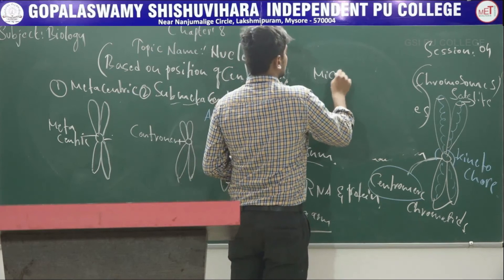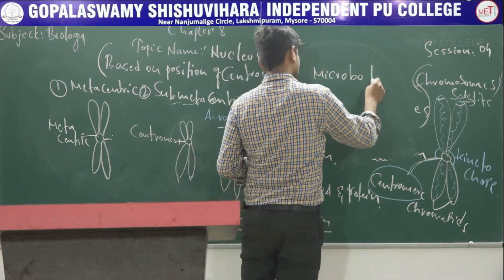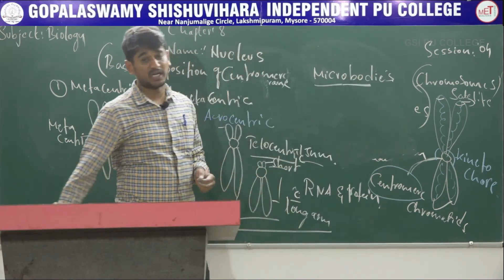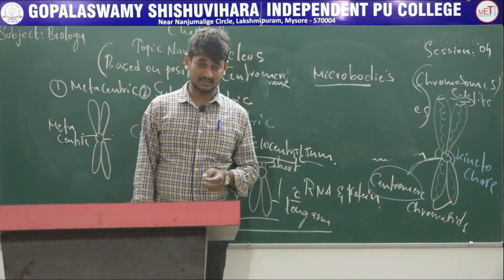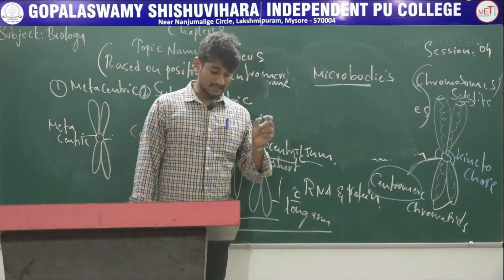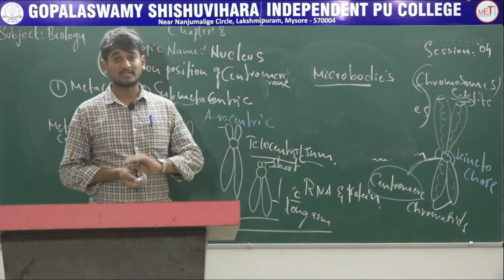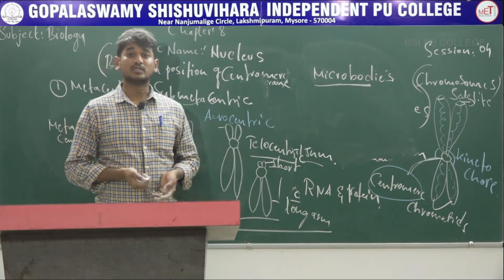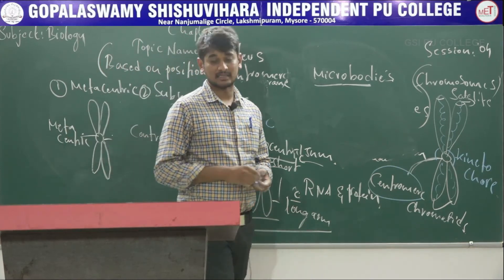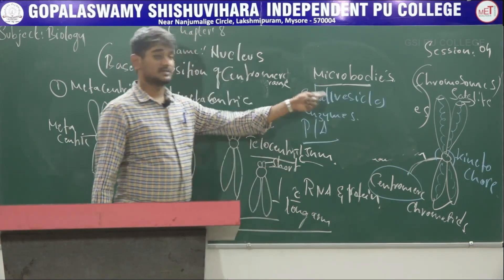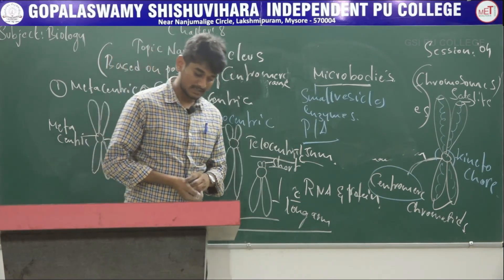The last one is microbodies. Microbodies are many membrane-bound small vesicles that contain enzymes and are present in both plants and animals.